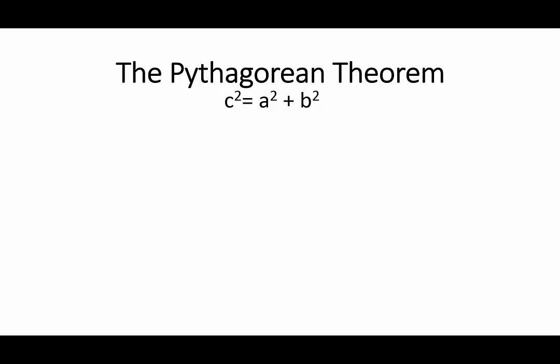Let us look at a simple proof of the Pythagorean Theorem, that is, that in a right triangle, the square of the hypotenuse is equal to the sum of the squares of the legs.